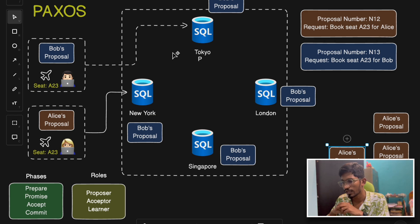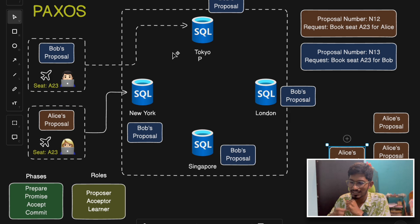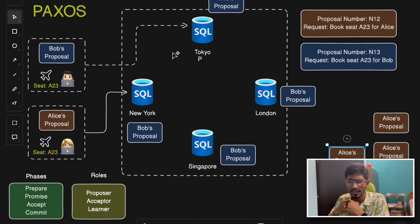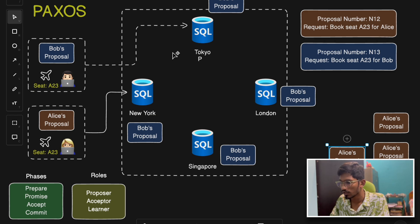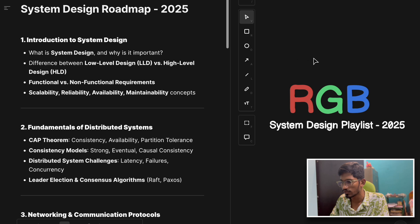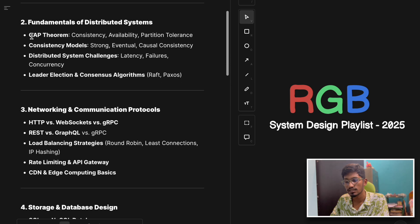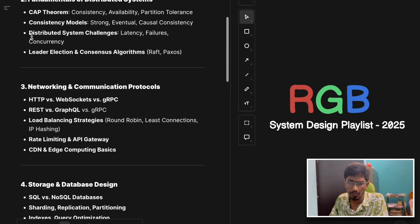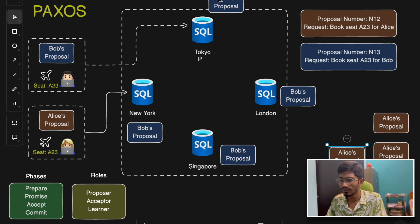To summarize, leader election is crucial for maintaining consistency in distributed systems — that's the essence of the Paxos consensus algorithm. In the next video, we'll discuss the Raft algorithm in detail with examples. If you found this video helpful, please like, share, and subscribe. Put any questions in the comment section. Keep an eye on the RGB system design playlist where we cover all system design concepts in a structured, simple manner with proper examples.